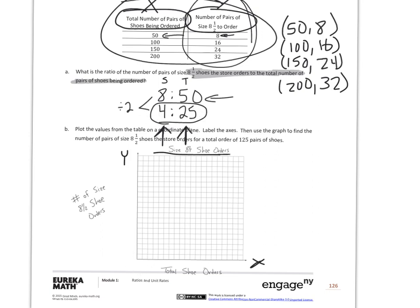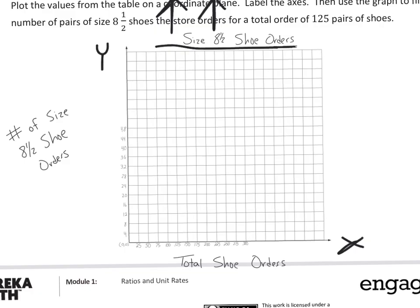But I'm going to go ahead and just use this ratio to number my graph. So the 4 represents size 8 1/2 shoes. So I'm going to number this by 4s. And I'm going to number this by 25s. And I'm going to start at 0 right here. And I'm picking that based on my simplest ratio. And so now looking at my graph, you can see that these numbers represent my y-axis, which is my size 8 1/2s. And these are my total shoe orders. So now I just have to plot my points.